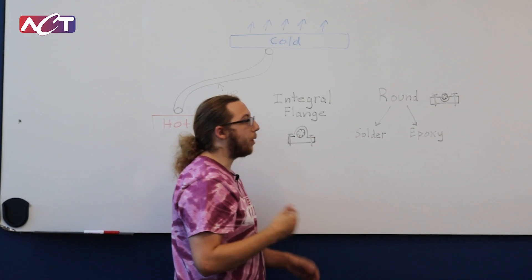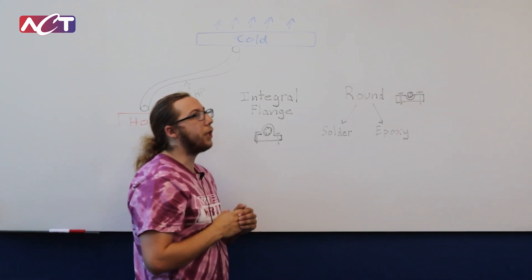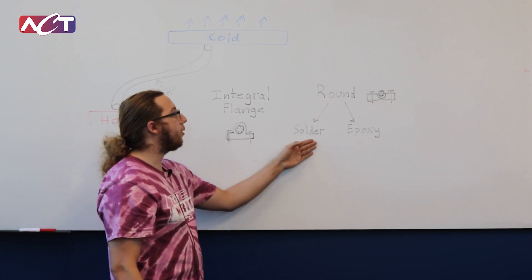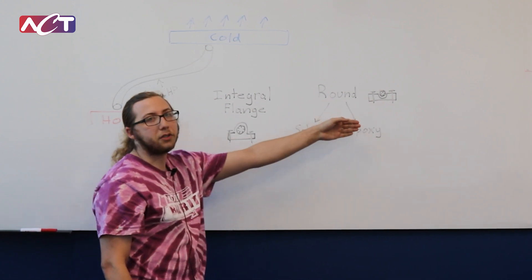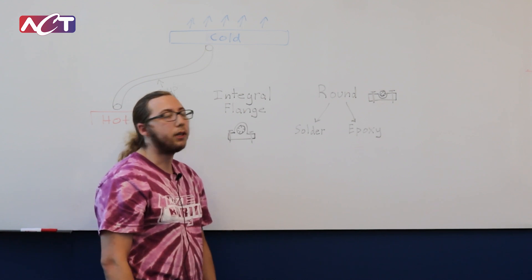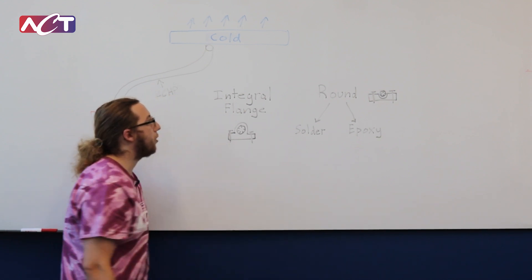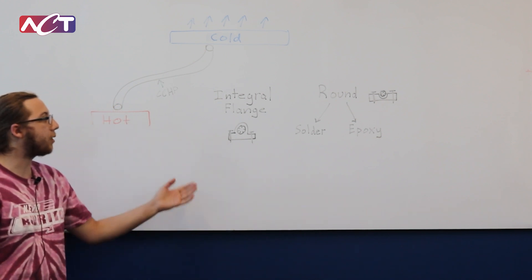As well as a little bit of change in the manufacturing flow of the heat pipe itself, because you have to solder the extrusion into the block first and then actually charge it with ammonia. So there's a few different steps there, advantages and disadvantages of each attachment method.